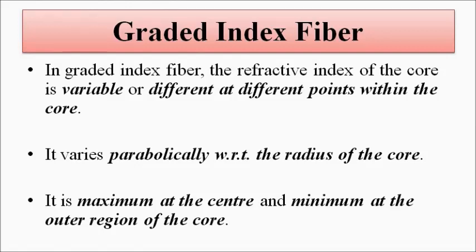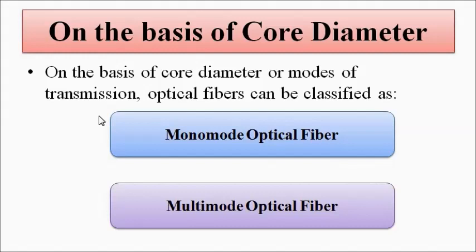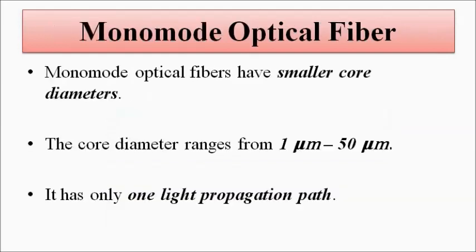On the basis of core diameter, which is another important characteristic of optical fiber, the optical fibers can again be divided into two categories: first, the monomode optical fiber, and second, the multimode optical fiber. Monomode optical fibers have very small core diameters, generally lying in between 1 micrometer to 50 micrometer. The core diameter for optical fibers overall falls in the range of 1 to 100 micrometer, but for monomode optical fibers, it falls in between 1 micrometer to 50 micrometer.